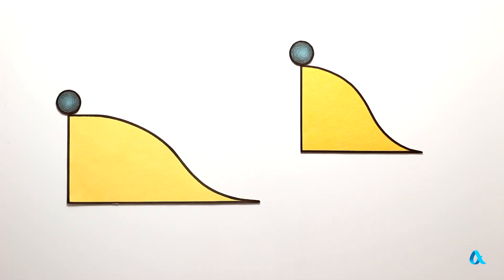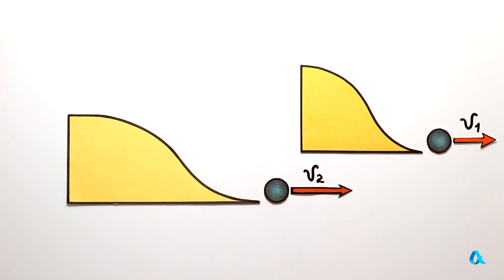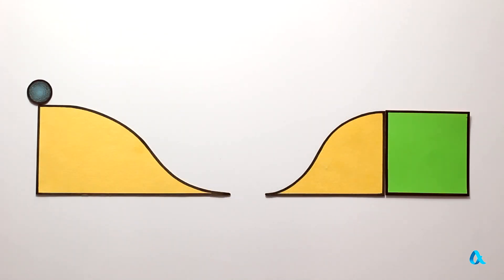Imagine now that there are two slides of the same height, rolling down which the ball acquires different speeds. We put them opposite each other and roll the ball down the slide which imparts greater speed.